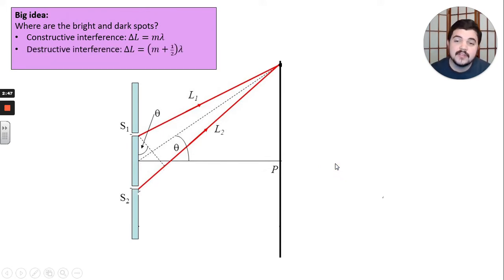And then you have destructive interference when you shift one of the waves half a wavelength compared to where there was constructive interference. So what is the path difference, delta L, for this setup? That's going to be our motivation.